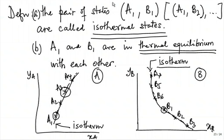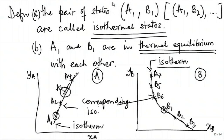Extending this argument: B1 and B5 are also isothermal states. Any state on A's isotherm, when brought into contact with any state on B's corresponding isotherm, will be in thermal equilibrium. So this isotherm in the state space of A and that isotherm in the state space of B are called corresponding isotherms.